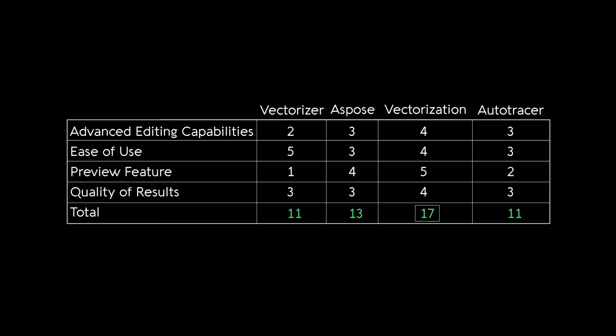Tallying up the results, these are the final scores. Vectorization is the clear winner with 17 points. Aspose comes in second with 13 points. And Vectorizer and Auto Tracer are tied for last with 11 points each. Despite the final results, all four of these are good free vectorizer tools that you can use for your artwork or print on demand. Which tool is right for you ultimately depends on your specific needs and preferences.